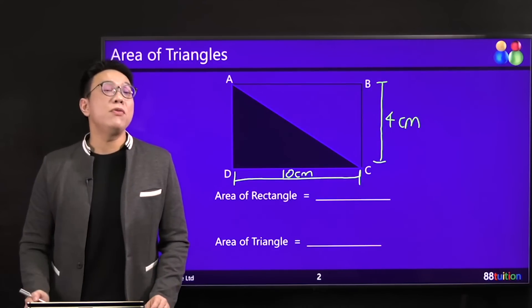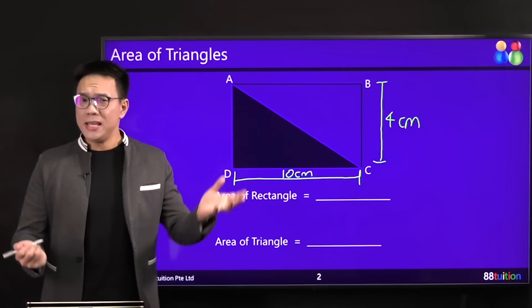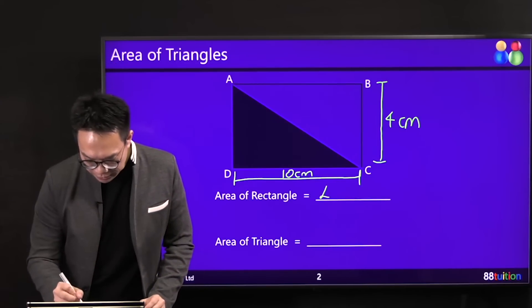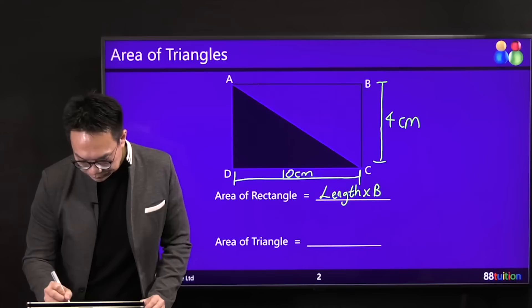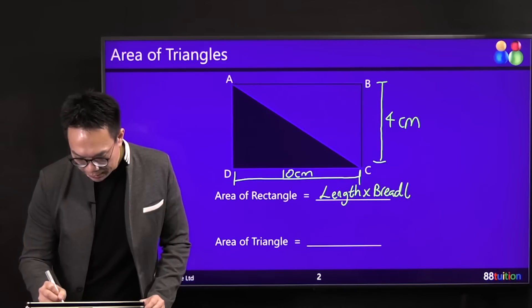How do you find the area of rectangle? Che! Easy! Length times breadth, right? So the area of the rectangle is length times breadth, and what is length times breadth?